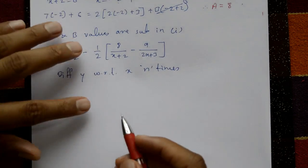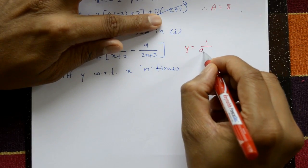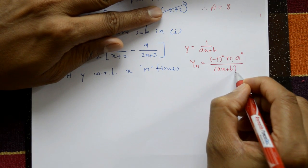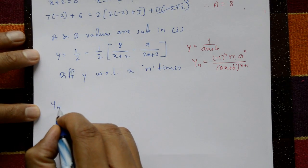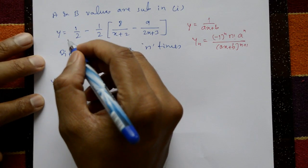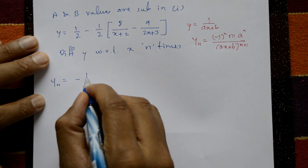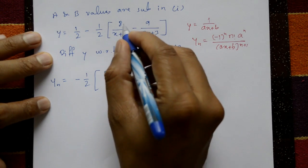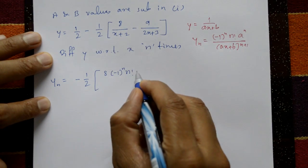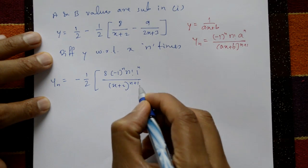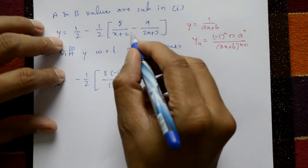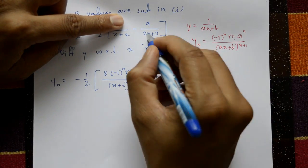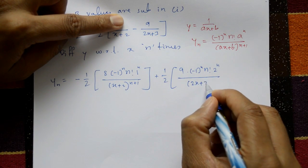Using the standard formula for 1/(ax+b): y_n = (-1)^n · n! · a^n / (ax+b)^(n+1). The constant 1/2 differentiates to 0. So y_n = -(1/2) · 8 · (-1)^n · n! · 1^n / (x+2)^(n+1) plus (1/2) · 9 · (-1)^n · n! · 2^n / (2x+3)^(n+1).